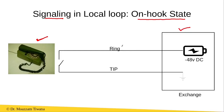The telephone is connected to the exchange using a pair of copper wires. One of the wires in this pair is the ring wire and the other is the tip wire. The ring wire is connected to the minus 48 volt DC power supply in the exchange, while the tip wire is grounded on the exchange side. Between these two wires there is a switch, and when the telephone is in the on-hook state, this switch is open.